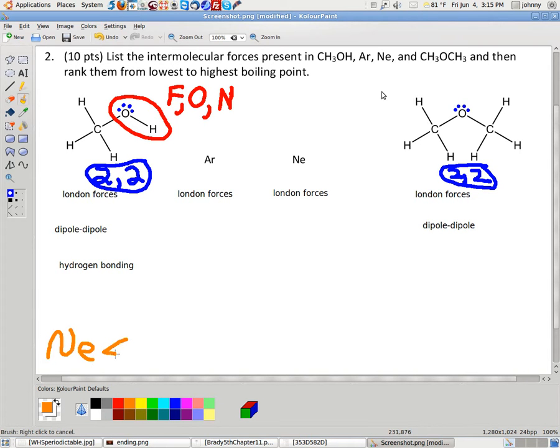Then the next in line would be Ar. Now, the question is, which one do we write down next? Well, the easiest thing is to ask yourself which one would have the highest between these two. Well, the highest would be methanol. Methanol would have the highest boiling point because it's got the most amount of forces. So, that means next in line, there must be this dimethyl ether.